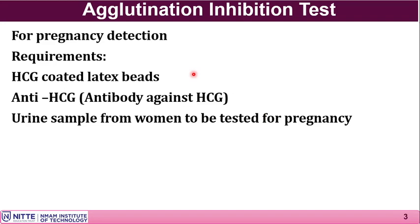The requirements include human chorionic gonadotrophin (HCG) coated latex beads. HCG is a peptide hormone secreted by the chorion, which is the placenta — one component of the placenta. This hormone is secreted in pregnant women and excreted in the urine, making its presence in urine an indicator of pregnancy.